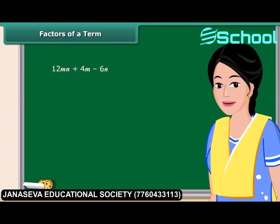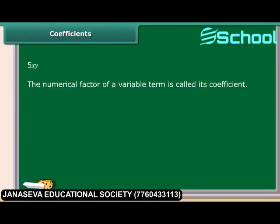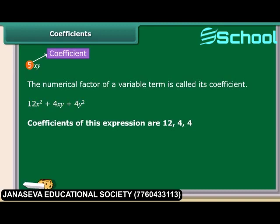A term is a product of its factors. Look at this term: 3, X and Y are the factors of the term 3XY. We can also represent 5XY plus 10 by a tree diagram. The dotted lines are used here for factors and continuous lines for terms. Remember, the factors cannot be further factorized. The numerical factor of a variable term is called its coefficient. In the term 5XY, 5 is the coefficient of the whole term. In the expression 12X squared plus 4XY plus 4Y squared, it has three terms and 12, 4, 4 are the coefficients of the terms.